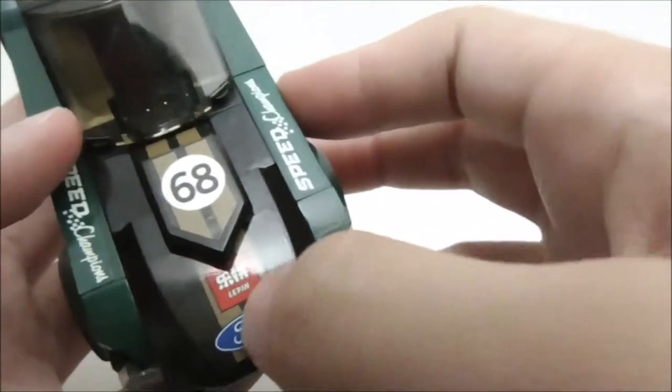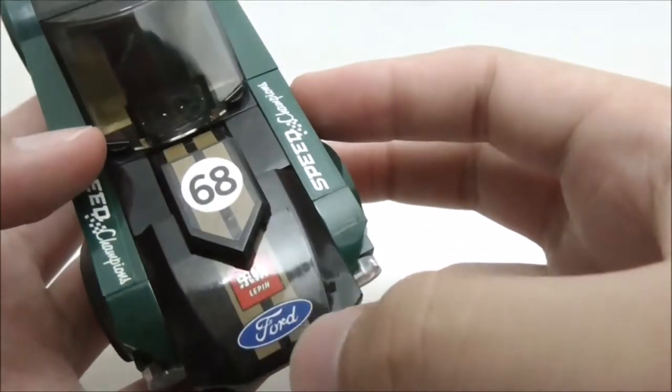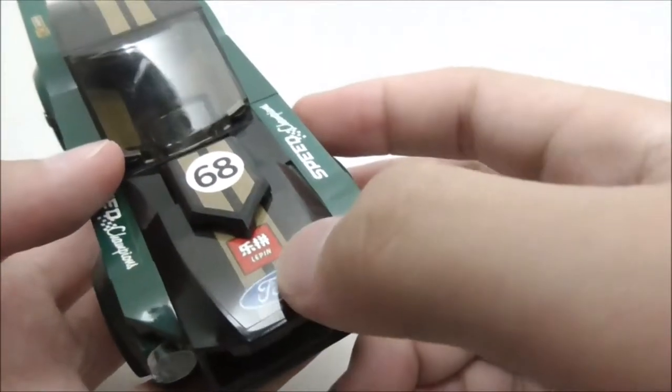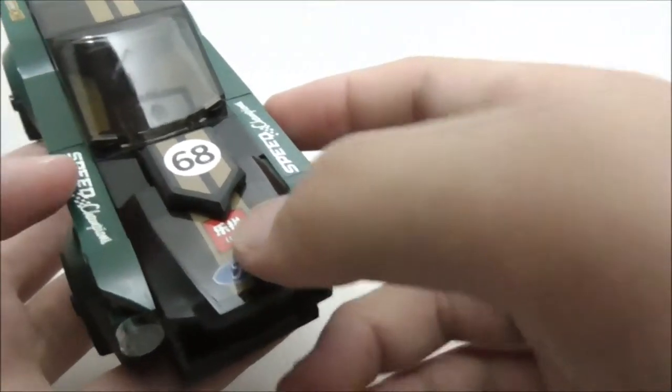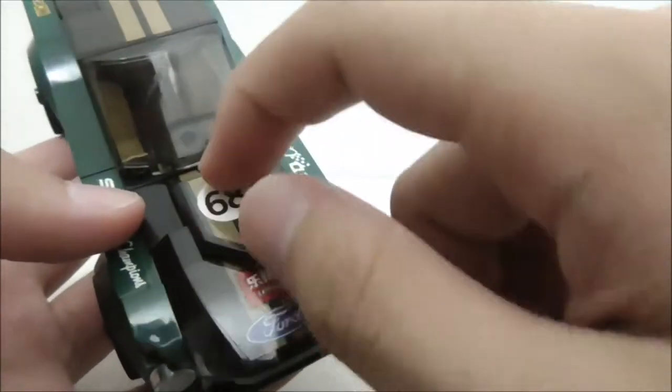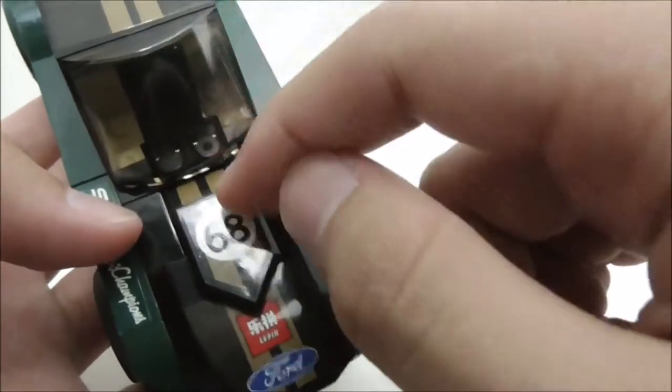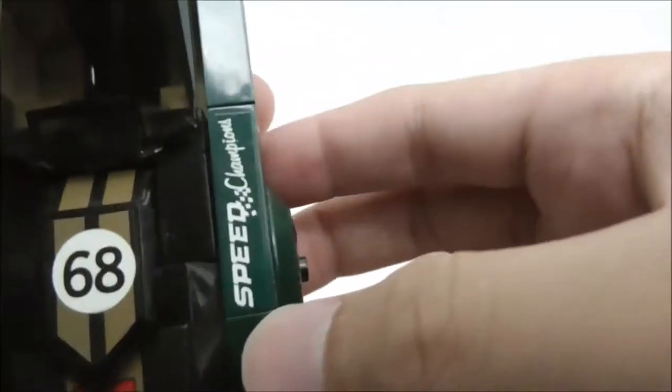And yeah, on the hood here you have this hood piece. Obviously you have the stickers right here. You have this Ford logo, you have this Lepin logo. This was originally a Lego logo, so obviously they have changed it to a Lepin logo. And you have this 68 right here, you have more stripes, you have the Speed Champions logo right here. And I am surprised that they didn't change this to Gainer Champions.